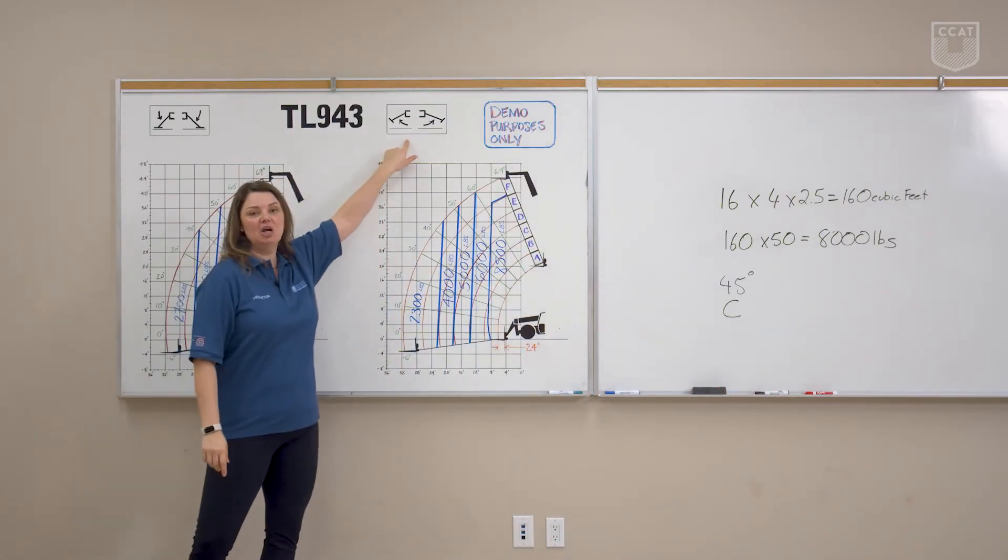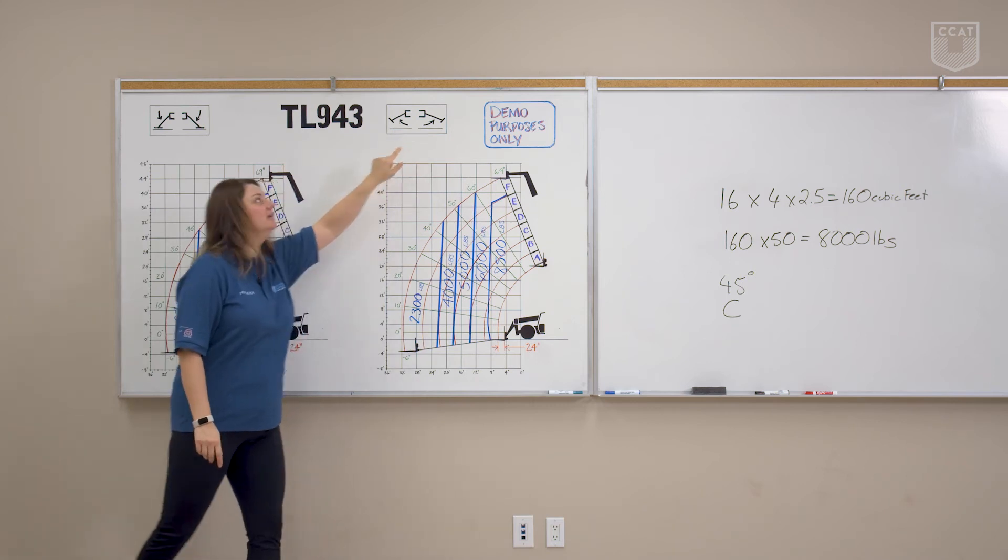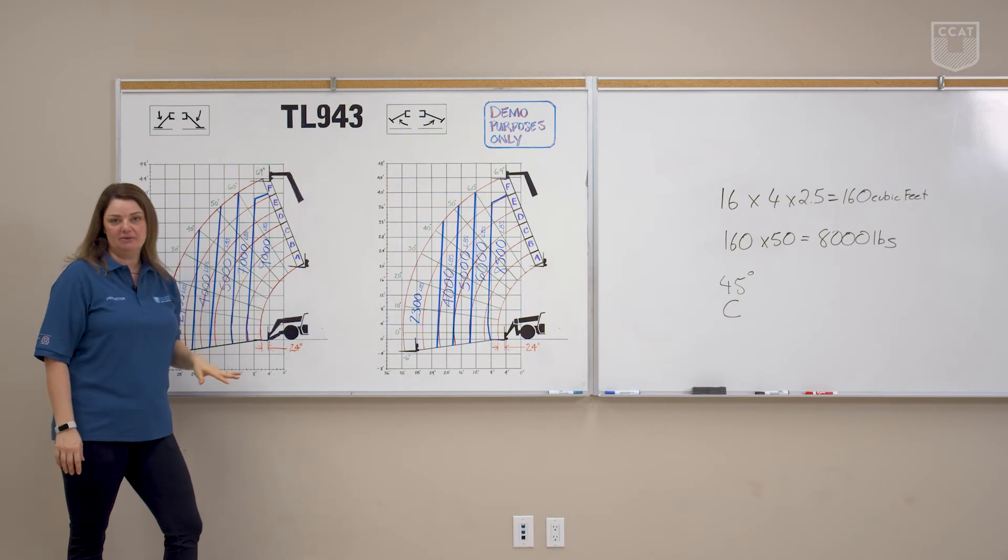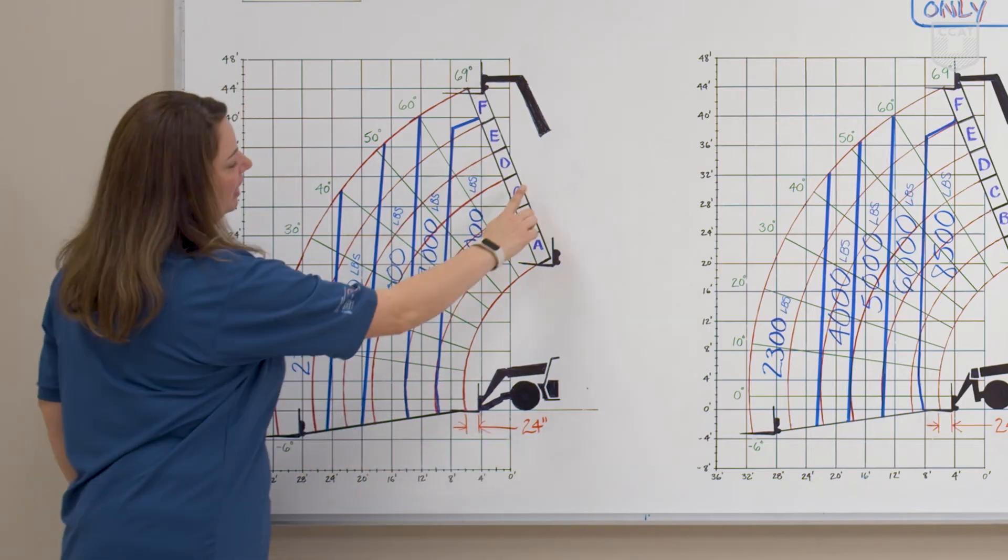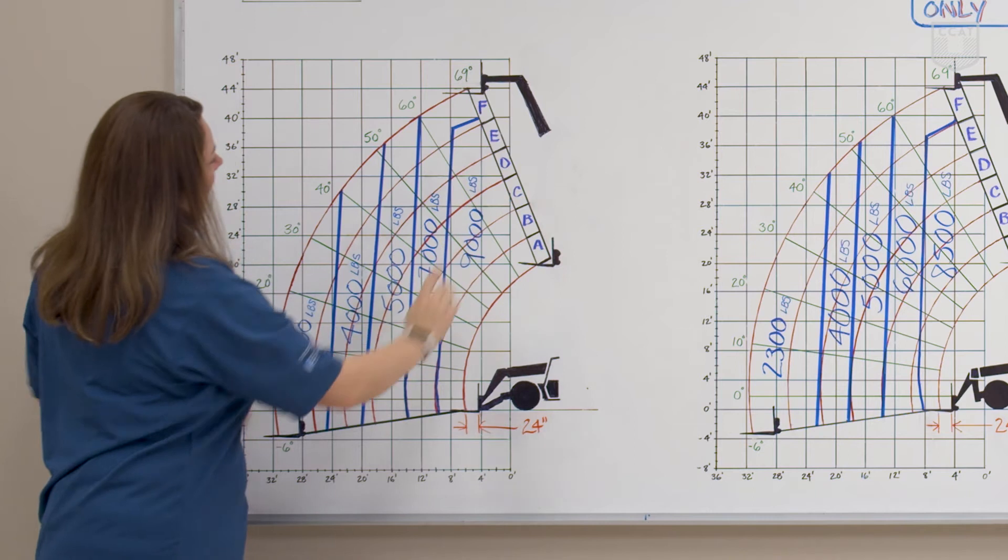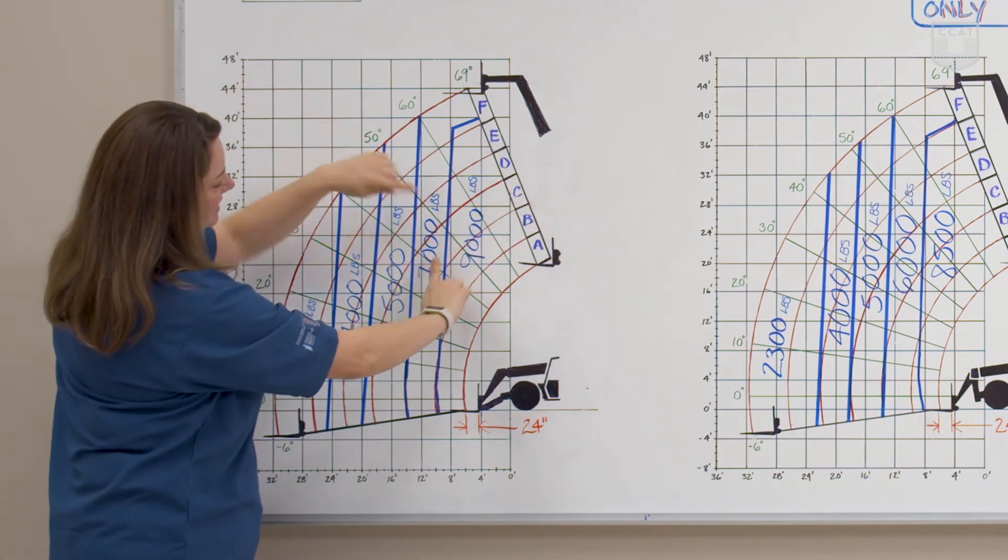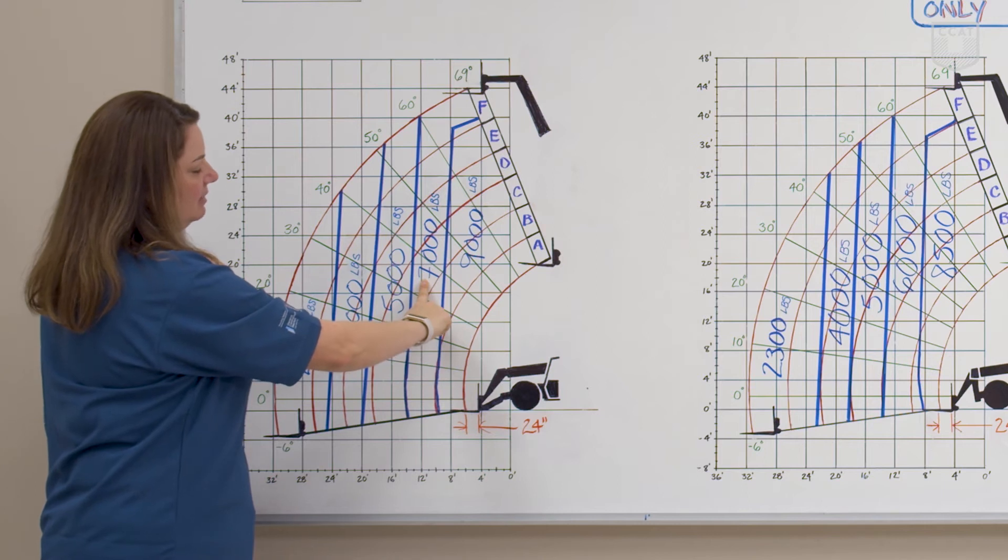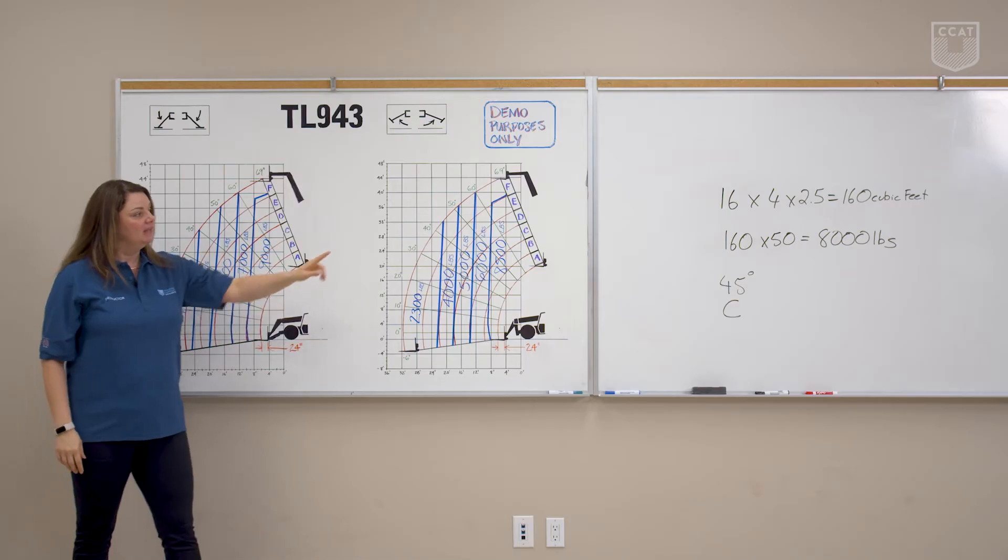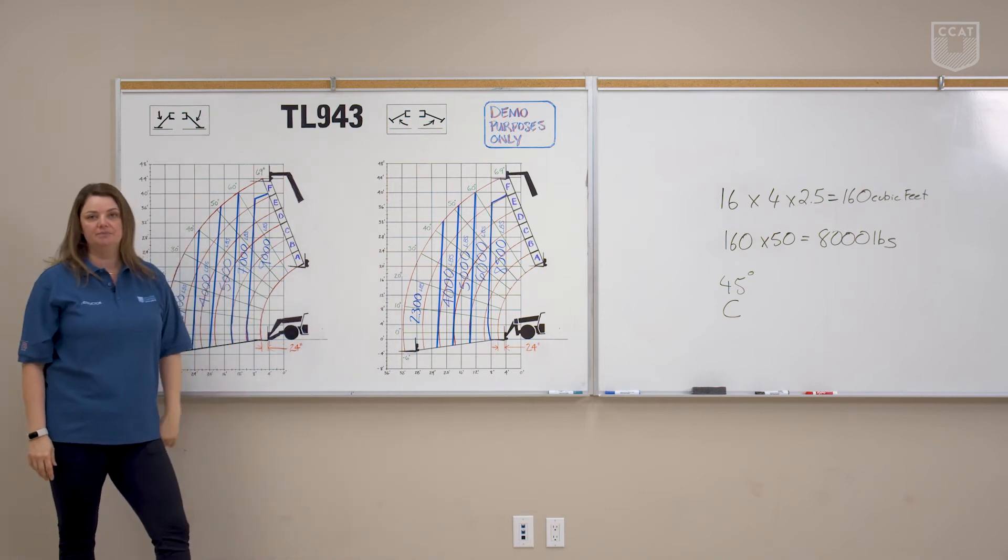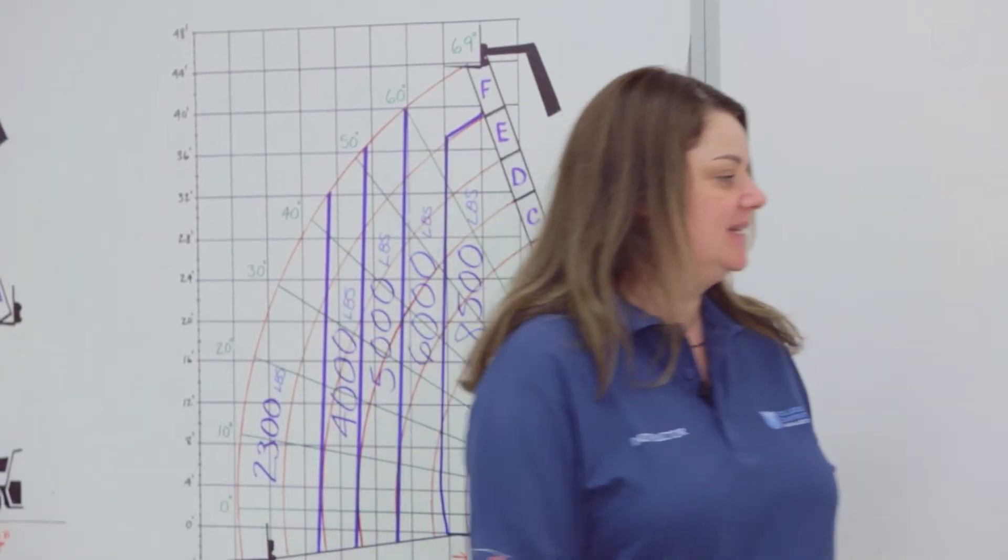Now we're going to go over to our load charts and see if this is going to be a safe lift. Remember, we have one load chart that has our outriggers lifted, and one load chart where our outriggers are down. In this example, we can have our outriggers down. So then we're going to look where our C goes and our 45 degrees, and we're going to use those two together to see that we can lift about 7,000 pounds. Is this going to be a safe load? Lifting upwards of 8,000 pounds, this will not be a safe load. So we're going to move on to our next example.